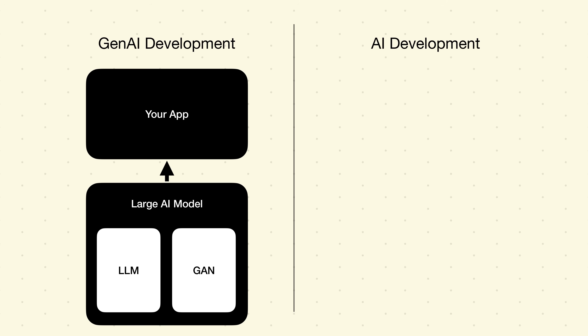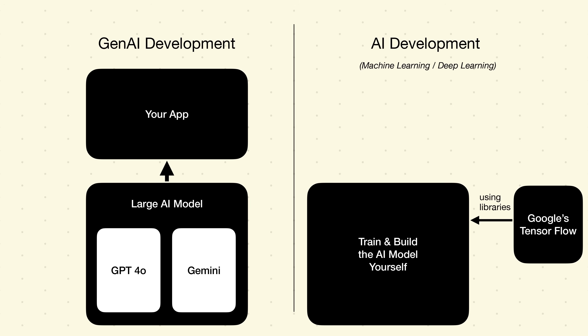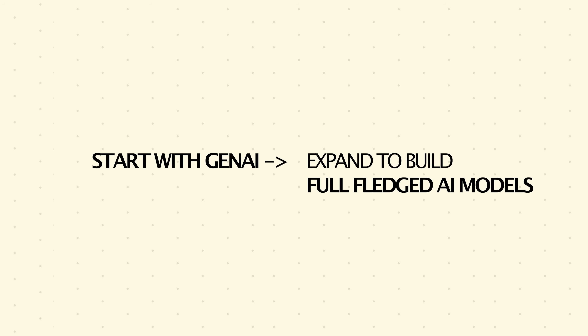Another thing to clarify is that AI development and Gen AI development are different. Gen AI development is when you build on top of a large AI model, like a large language model (LLM) or generative adversarial network (GAN). For example, you can build your own chatbot, but underneath it you'll still use an LLM like ChatGPT's GPT-4o or Gemini models — you just teach the LLM how to respond to your users. In contrast, with machine learning or deep learning — commonly called AI development — you need to actually train and build the model yourself. If I were to start learning AI again in 2025, I would start with Gen AI and then expand by learning to build full-fledged AI models.